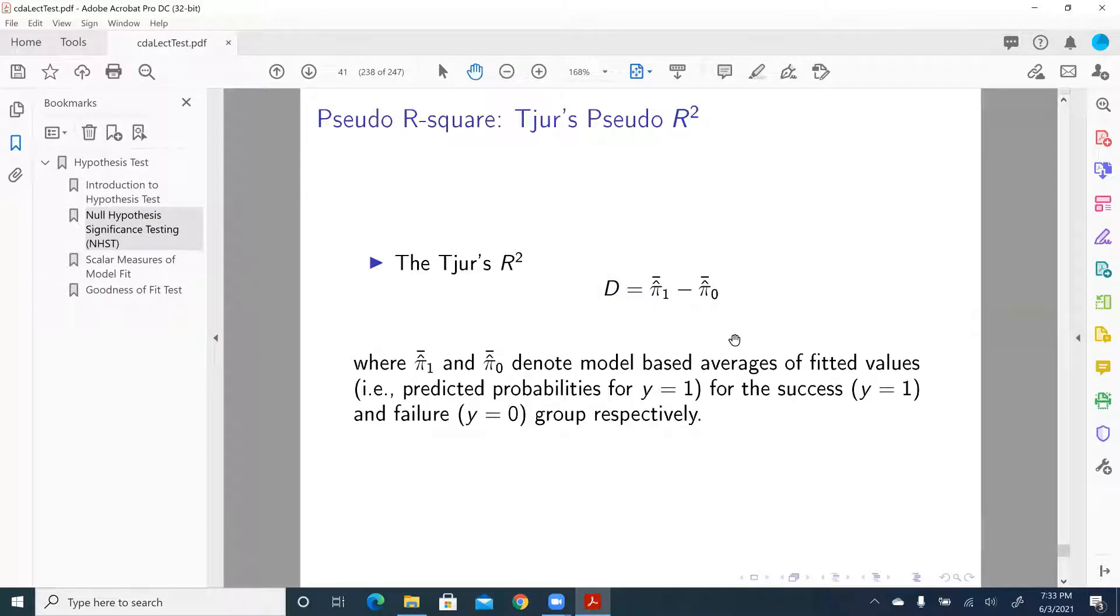So here pi 1 hat bar and pi 0 hat bar denote model-based averages of fitted values. So for every single observation, we're going to calculate its predicted probability for Y equal to 1 and the predicted probability for Y equal to 0, for every single case in our estimation sample. Then for all the probabilities for Y equal to 1, we're going to average across, and all the probabilities for Y equal to 0, we're going to average across. Get those averages, take a difference.